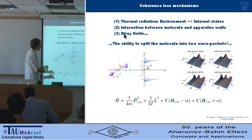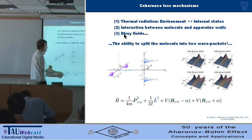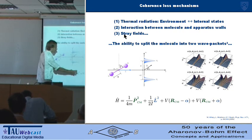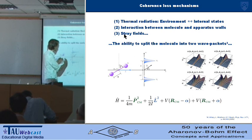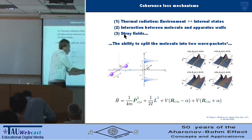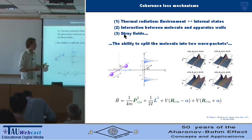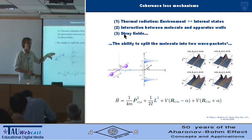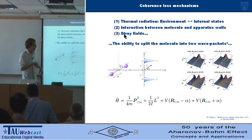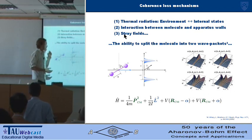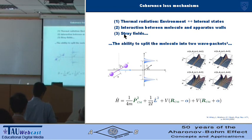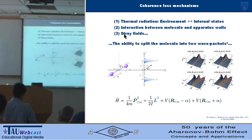So the Hamiltonian was this quite simple form: just the centre-of-mass kinetic energy, the internal energy due to this angular degree of freedom, and the slits, which couple the two—because the slits act on the individual atoms, not on the centre of mass or the relative coordinate. So they found that, as you'd expect, you lose some coherence.